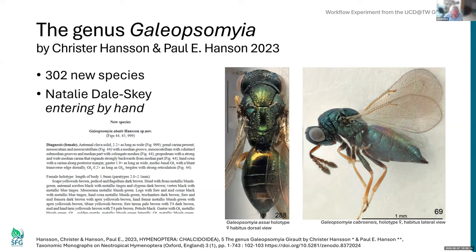But a major challenge for us are large monographs like this one by Krister Hansen and Paul Hansen on the genus Galeopsomia. There were 302 new species here. We had already done one big monograph by John Noyes with probably just about the same number of new species. Pamela Sagai in Brazil and I did it one species at a time, key-punching in all the information — it took weeks and months of work. Natalie Dale-Skye in London had already started entering some of these species by hand. But Debbie came up with the brilliant suggestion of why don't we see if we can use a Plazi treatment to sort of semi-automate the process of just getting the names into the UCD.